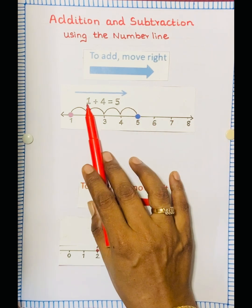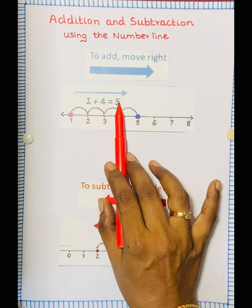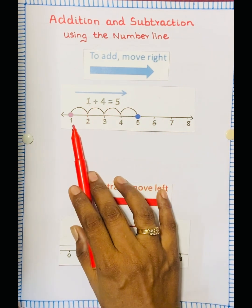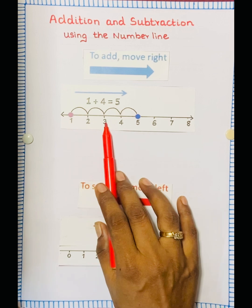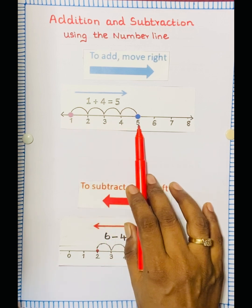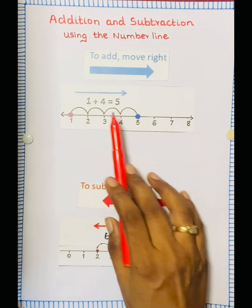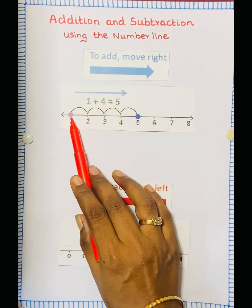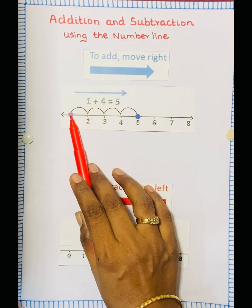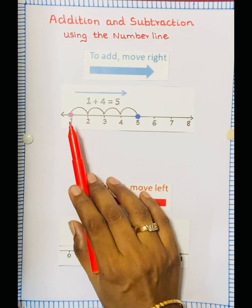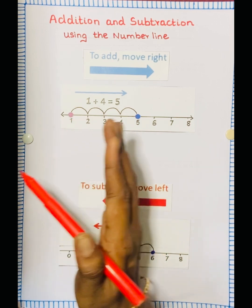For example, 1 plus 4. See the number line: 1, 2, 3, 4, 5, 6, 7, 8. First we have to point out 1, then we have to move to the right side.